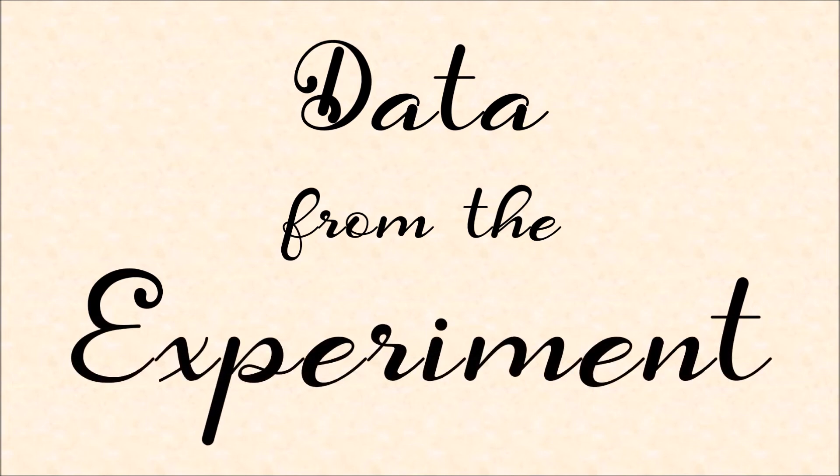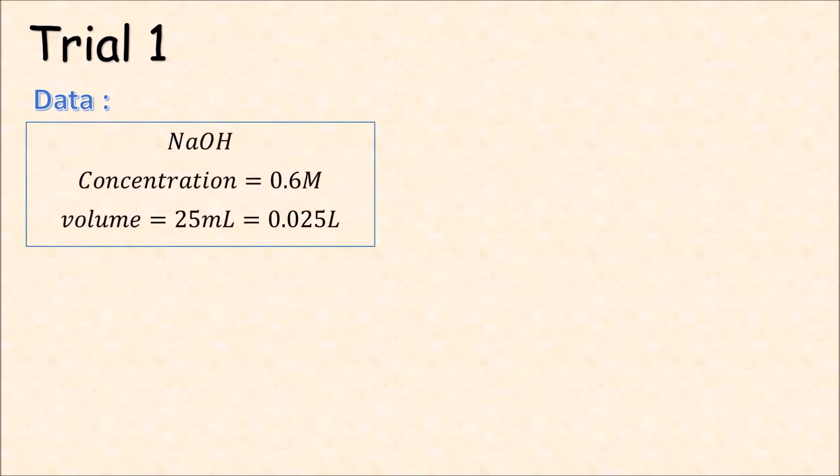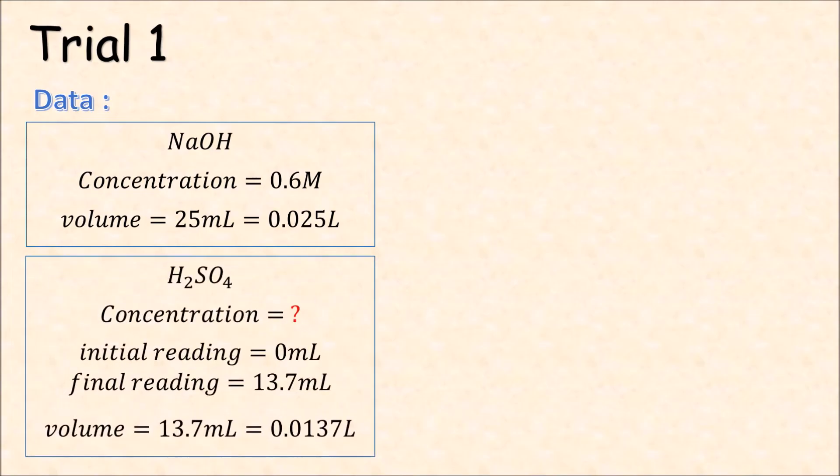Here is the data that we take from the experiment. For trial 1, NaOH has a concentration of 0.6 molar and the volume is 0.025 liters. For sulfuric acid, we don't know the concentration. The initial reading is 0 ml and the final reading is 13.7 ml. So the volume is 0.0137 liters.